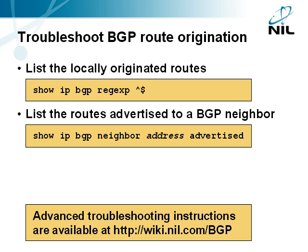We've used these commands to troubleshoot BGP route origination and propagation. The show IP BGP regexp caret dollar command displays all routes in the BGP table that have an empty AS path — only the locally originated routes match this requirement. If the local router does not originate routes that are present in its routing table, you have to check the BGP configuration and configure origination of local routes with a redistribute or network router configuration command. The show IP BGP neighbor advertised command displays all the routes that the local router advertises to a BGP neighbor. If the router does not advertise its local routes to the BGP neighbors, someone has probably configured outbound BGP filters — you will have to perform more complex BGP troubleshooting. Find the guidelines in the BGP Resource Center at wiki.nil.com/bgp.